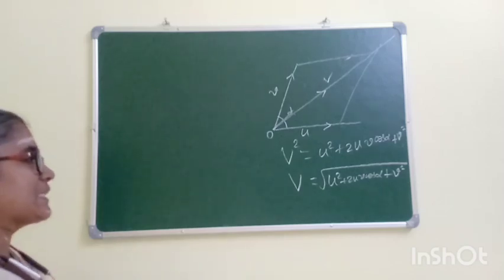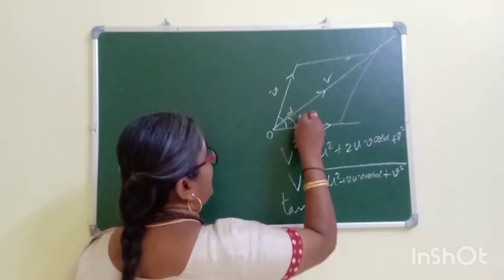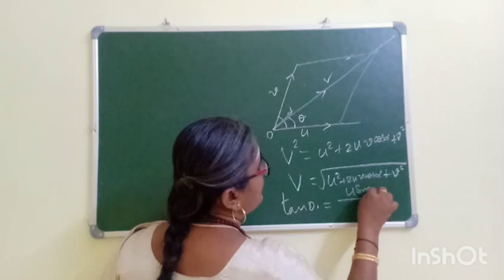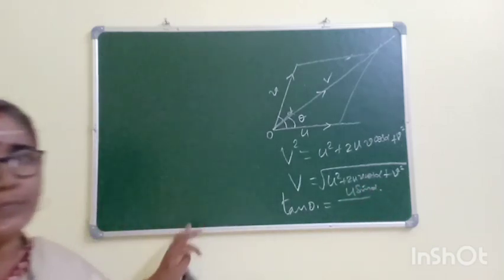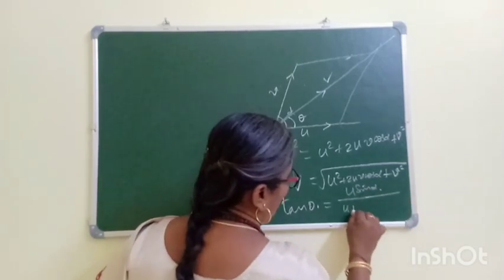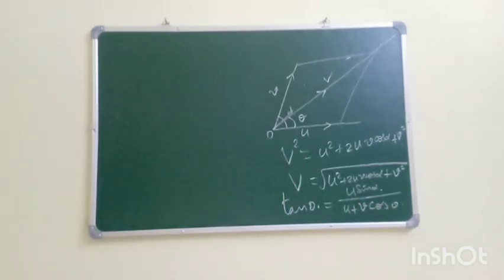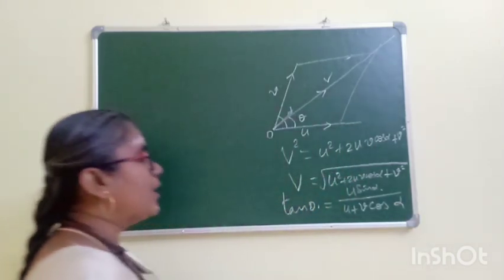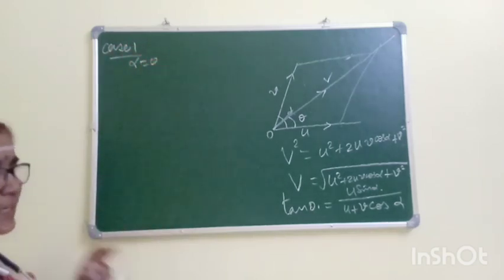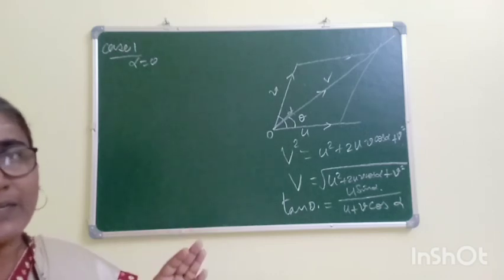This is the result. Now for the direction, tan θ = u sinα / (u + v cosα). So, tan θ = u sinα / (u + v cosα). Small v equal to capital V equal to alpha. That is the result for direction.